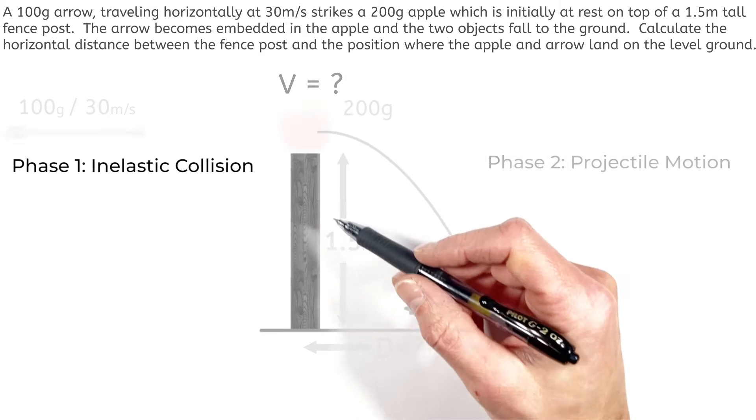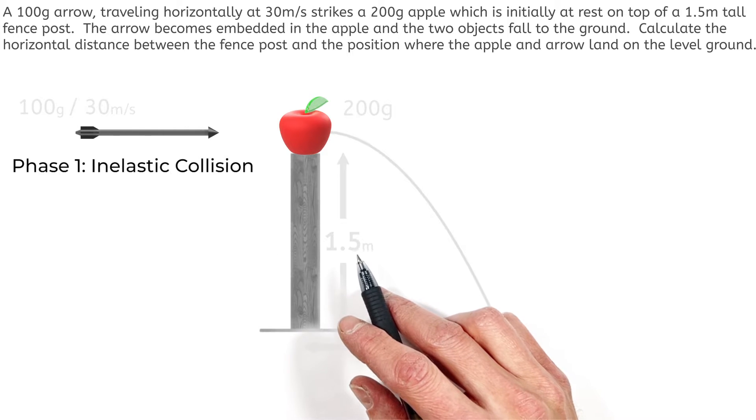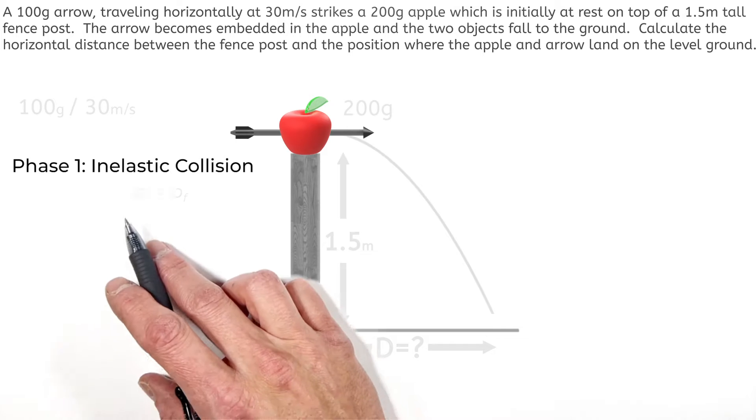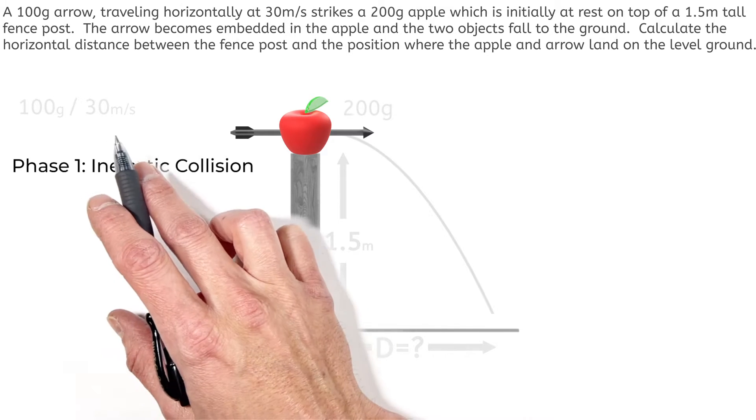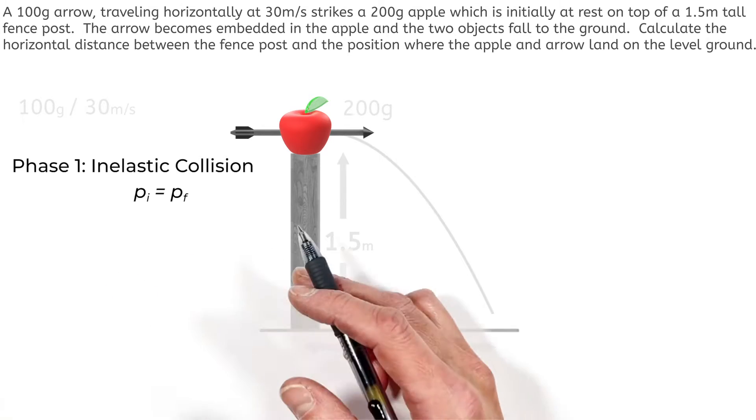So looking at the first phase of this problem, what we really have is a completely inelastic collision. That is a collision where two objects stick together. Now in any collision, we can say that the initial momentum of this system, in this case that's the arrow and the apple, is equal to the final momentum of the system, again, the arrow and the apple.